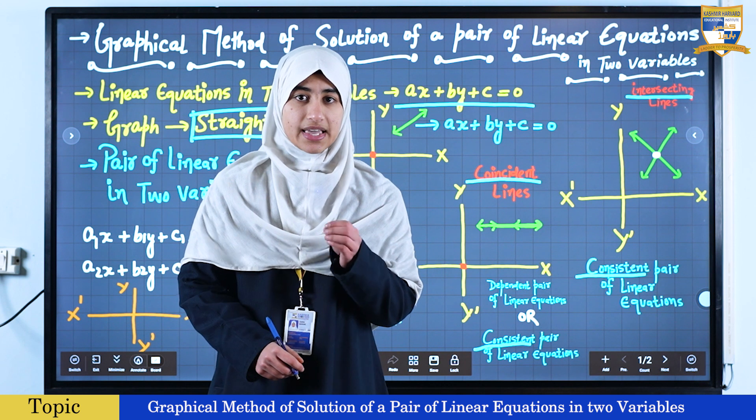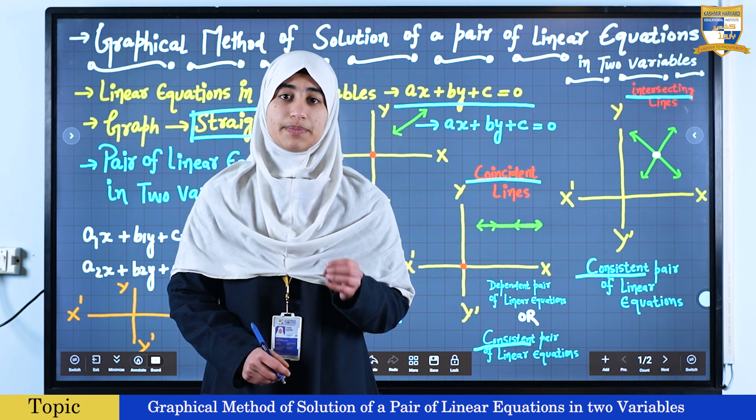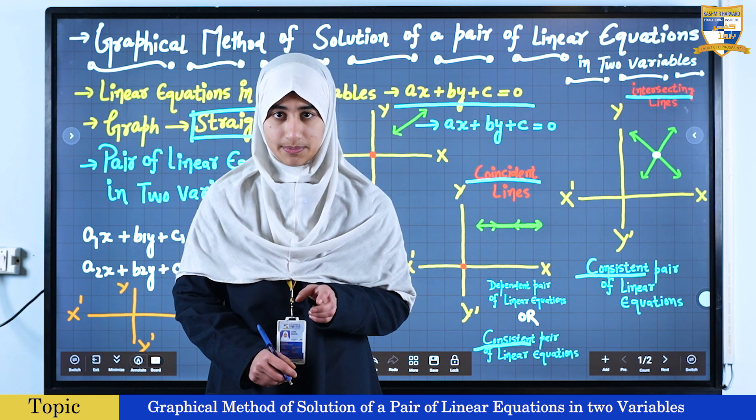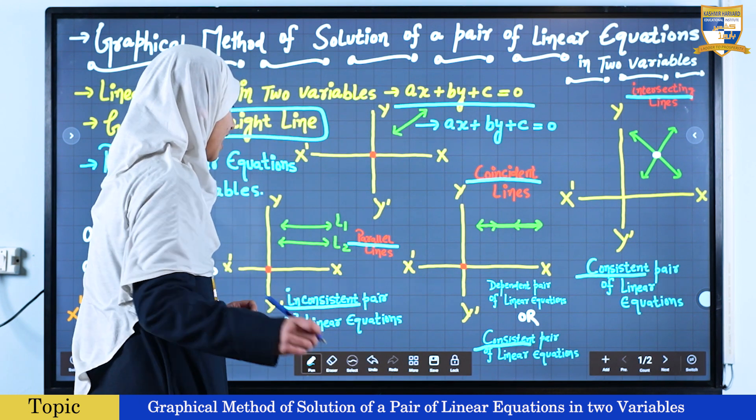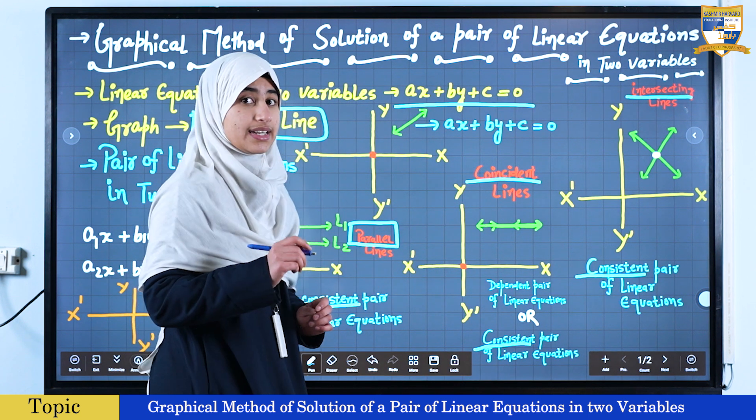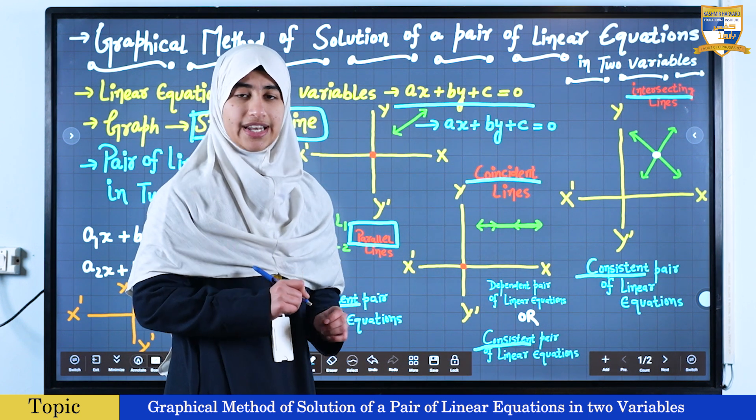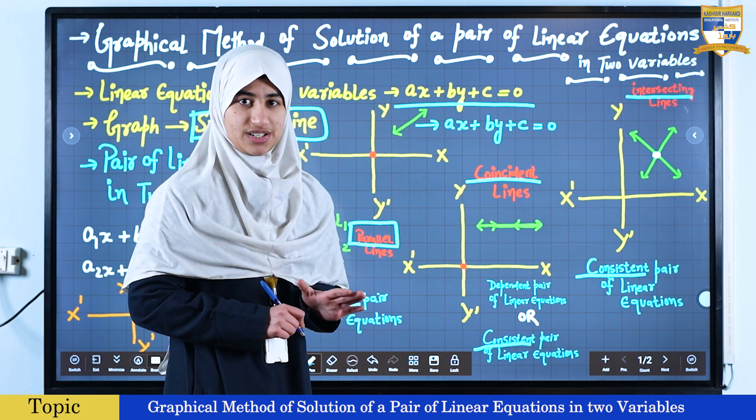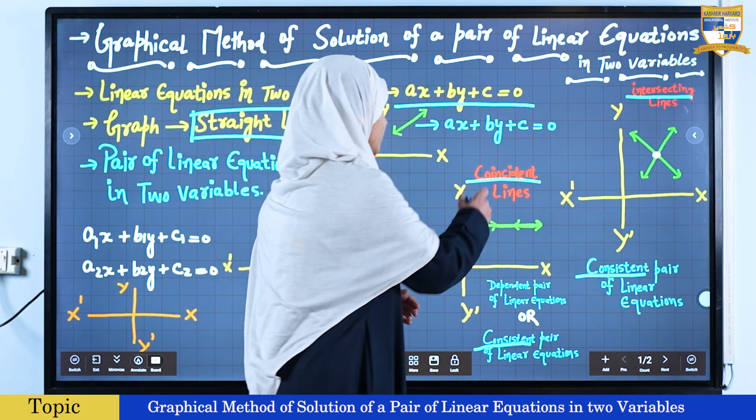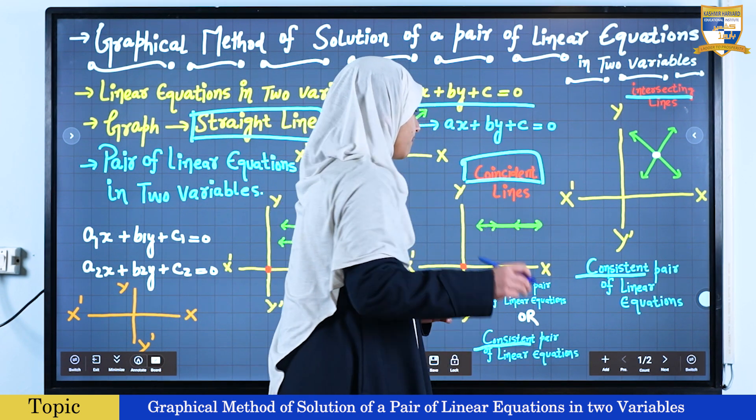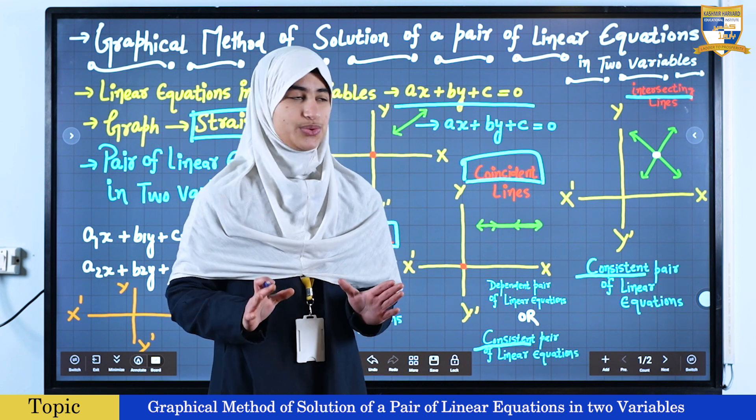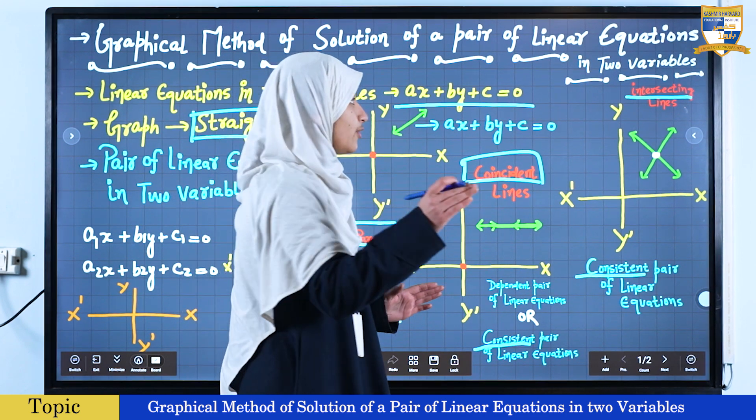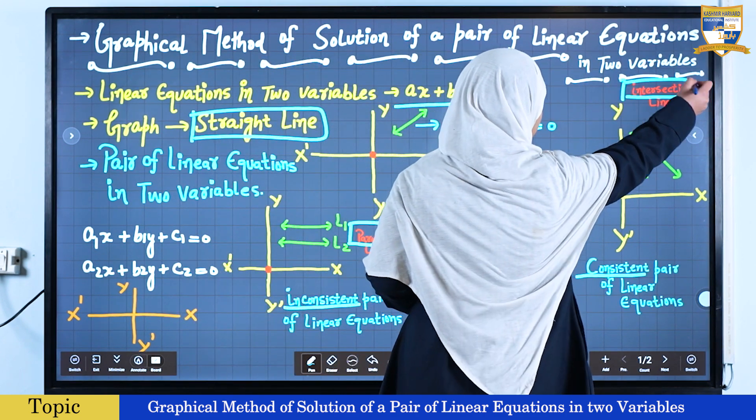Now let us summarize this behavior of lines representing a pair of linear equations in two variables and the existence of solutions. In case we have parallel lines, because the lines are not intersecting each other at any point, therefore we won't get any solution. In case we have coincident lines, because the lines lie upon one another, therefore we will get infinitely many solutions. And in case we are getting intersecting lines, therefore we will have a unique solution.